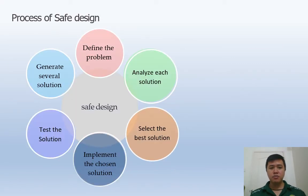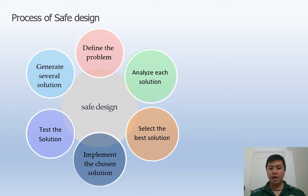This diagram shows the process of safe design. It starts from: define the problem, then analyze each solution, select the best solution, implement the chosen solution, test the solutions, and lastly generate several solutions. More details will be explained in the next slide.